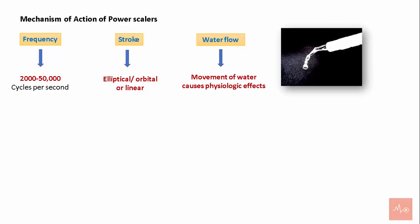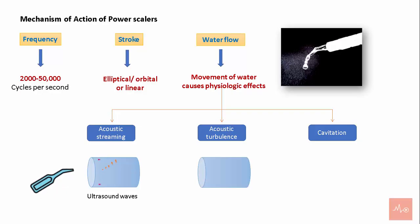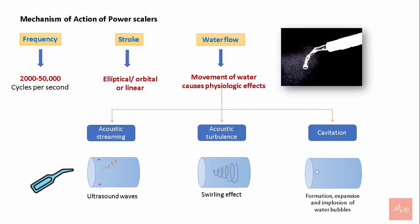Water has an effect on the efficacy of power instruments. Movement of water causes three physiologic effects: acoustic streaming, acoustic turbulence, and cavitation. Vibration of the tip creates acoustic streaming, which is unidirectional flow of fluid caused by ultrasound waves. This is followed by ultrasonic turbulence, created when movement of the tip causes the coolant to accelerate, producing an intensified swirling effect. Cavitation refers to the formation of bubbles in water caused by high turbulence.